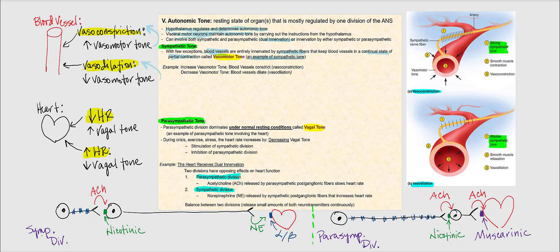Looking at the image to the right: the first scenario is a very strong sympathetic tone, therefore we have increased vasomotor tone leading to vasoconstriction of this blood vessel. If we have a weaker sympathetic tone, then we have a decrease in vasomotor tone — in other words, we will have vasodilation.